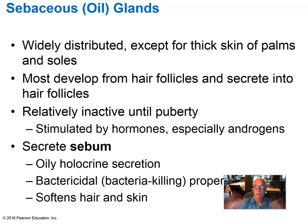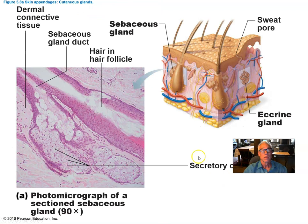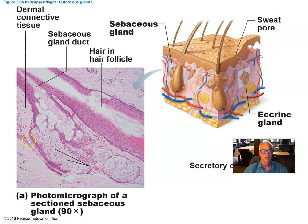Sebaceous glands use holocrine secretion, in which the superficial-most secretory cells disintegrate and the sebum product is released into the follicles. In a histological section, sebaceous glands have a characteristic look: cells that have taken up very little stain, appearing quite clear with a small punctate nucleus, surrounded by a capsule.